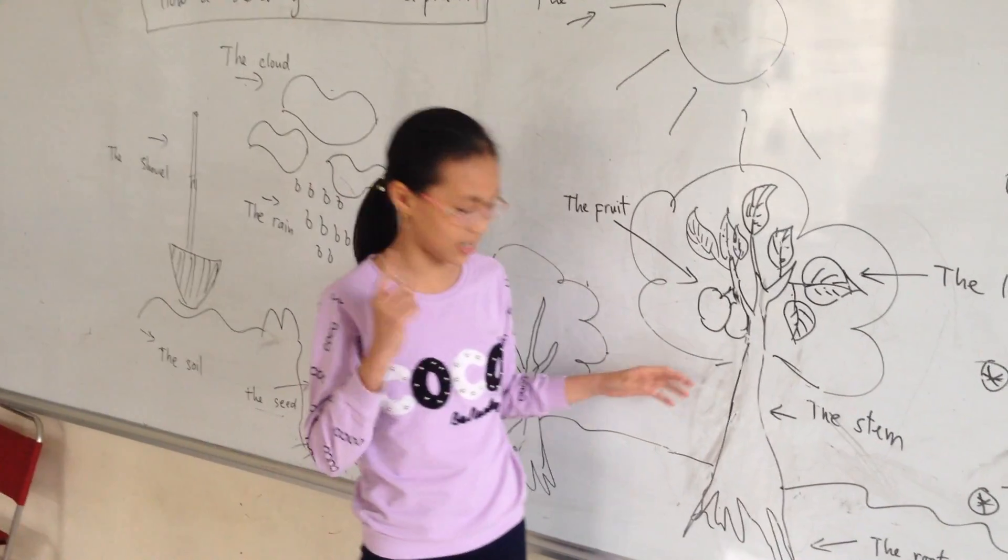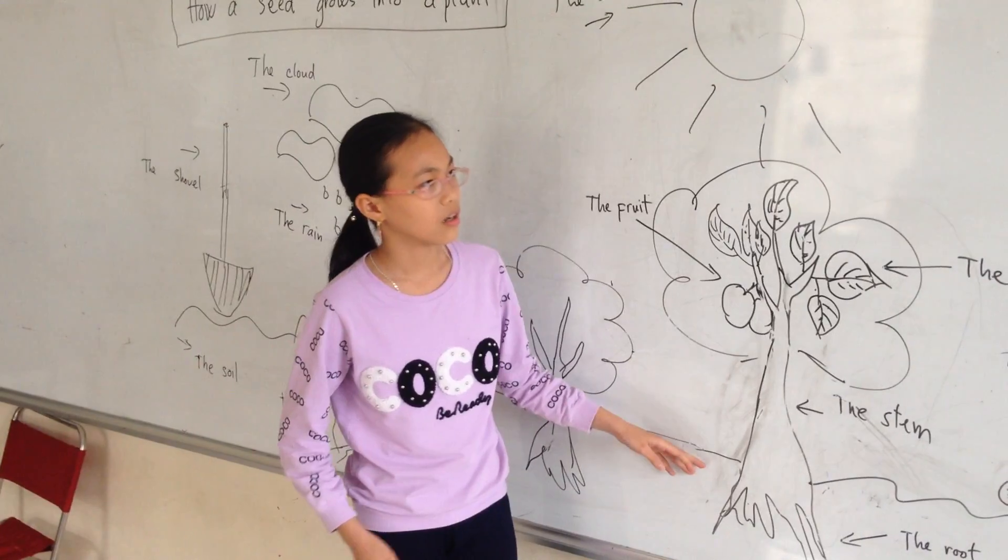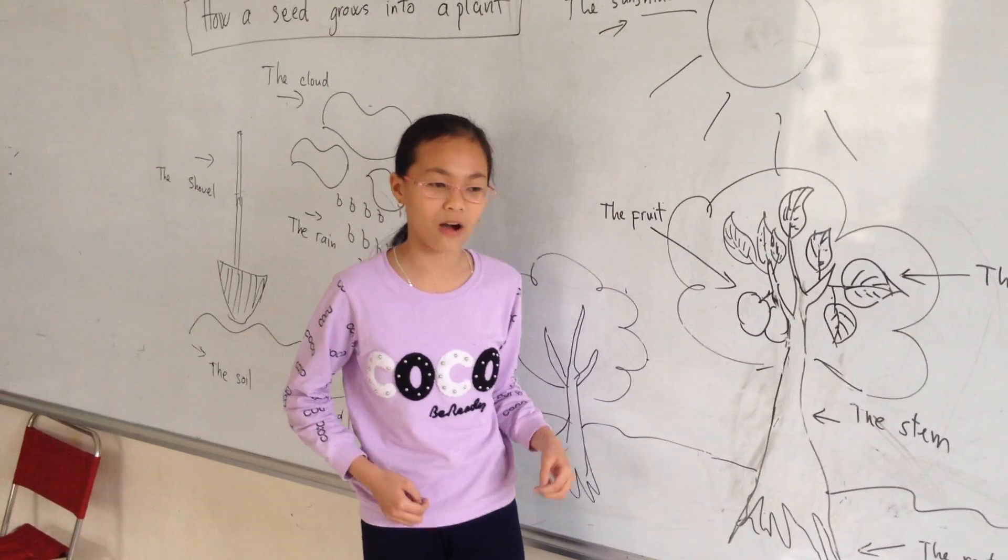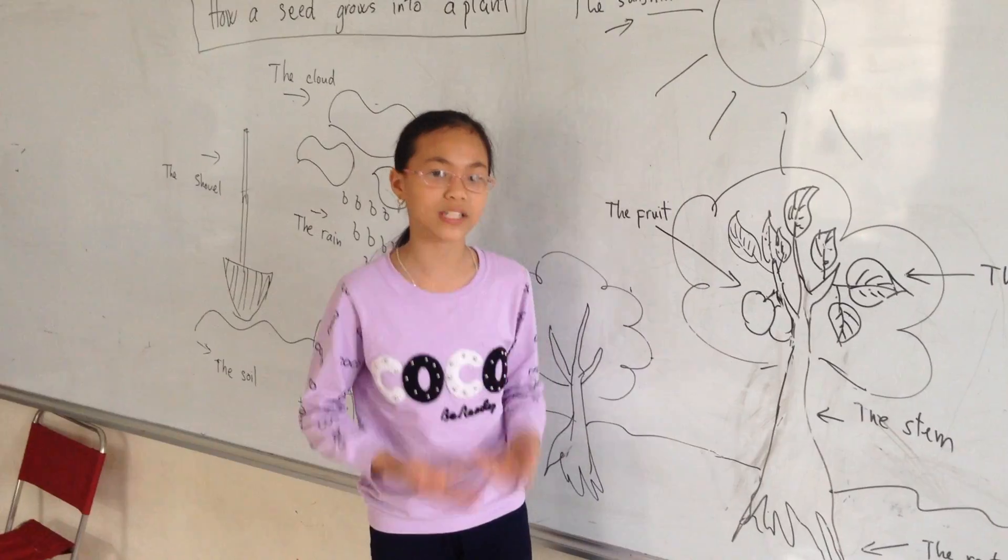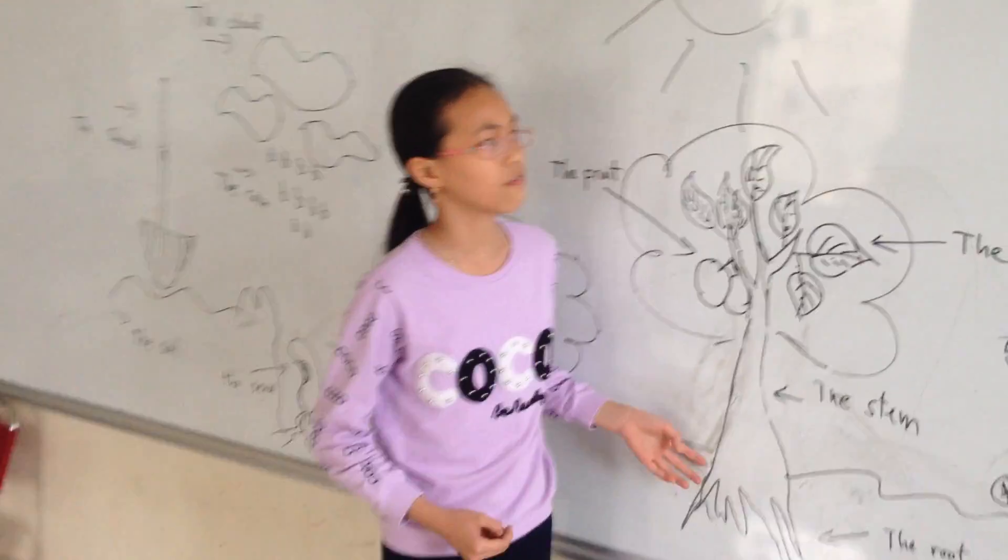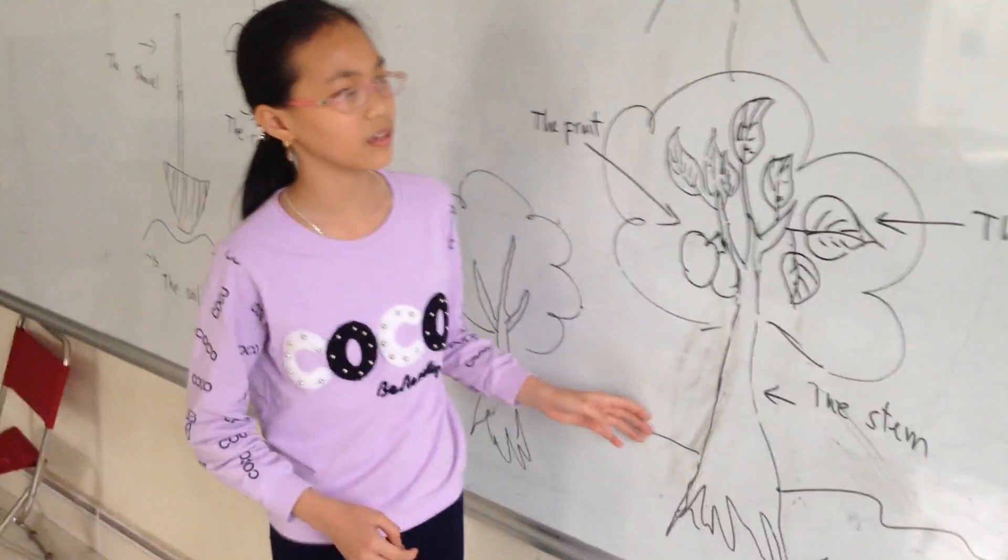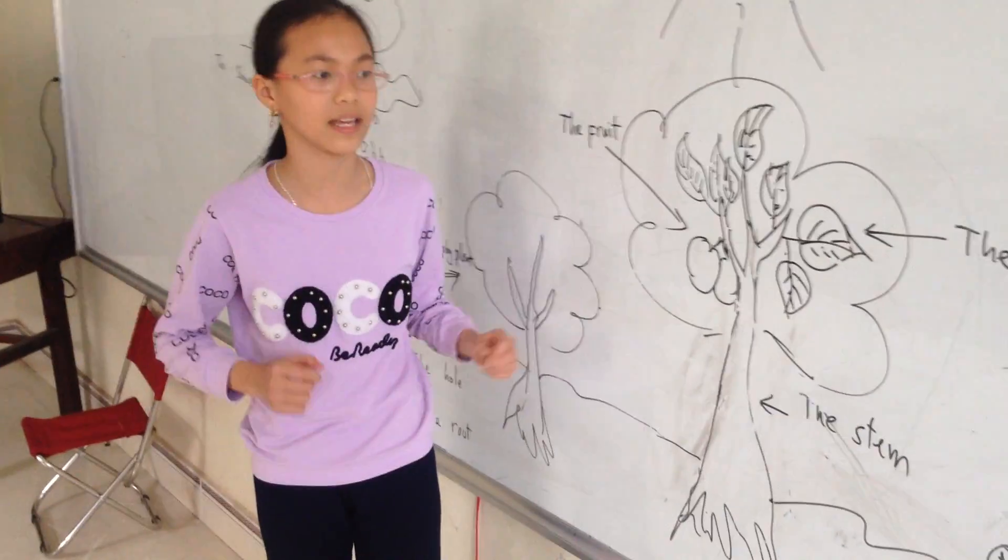The first part is the root. The root is buried underground. It absorbs water and minerals from the soil. It holds the plant in place.